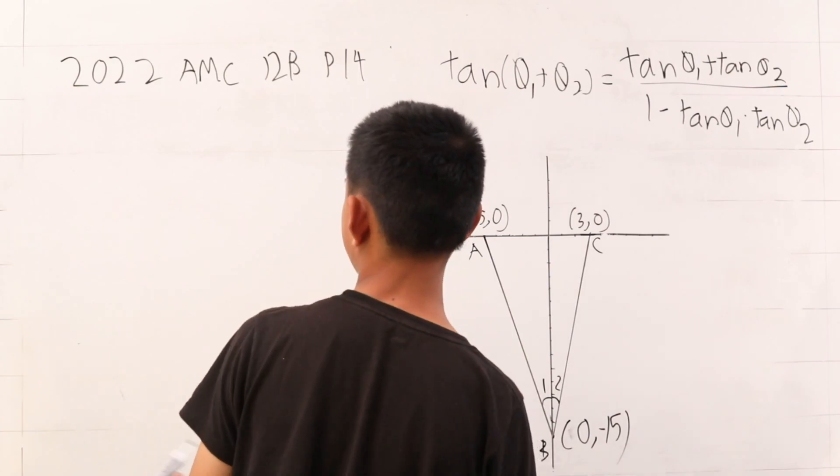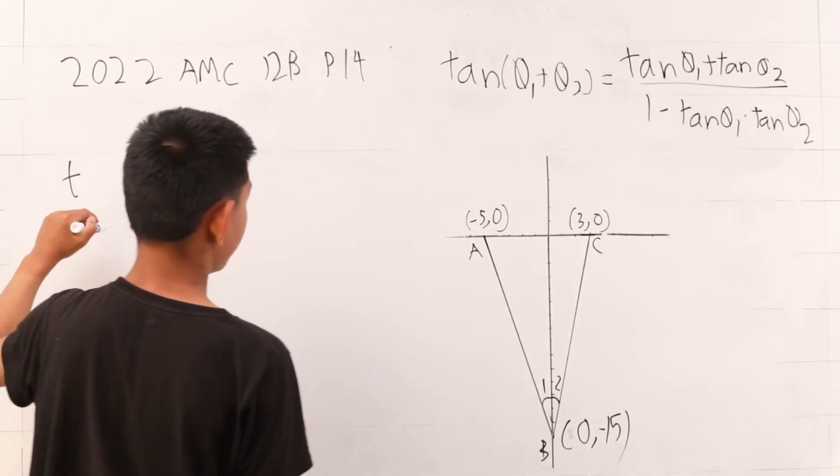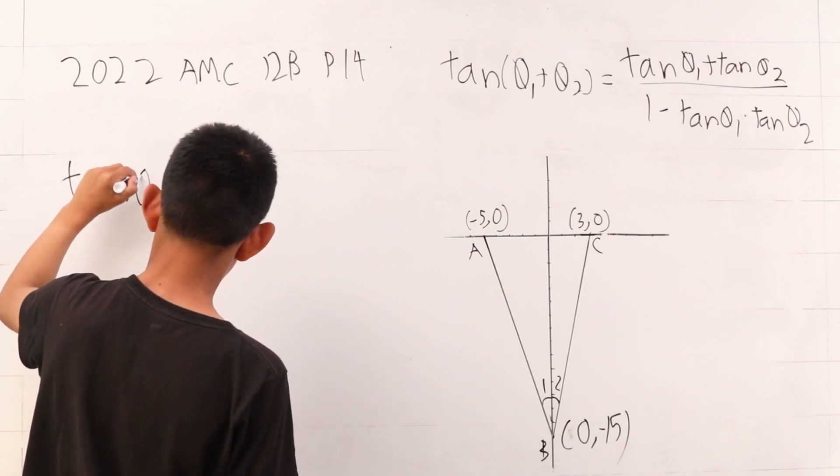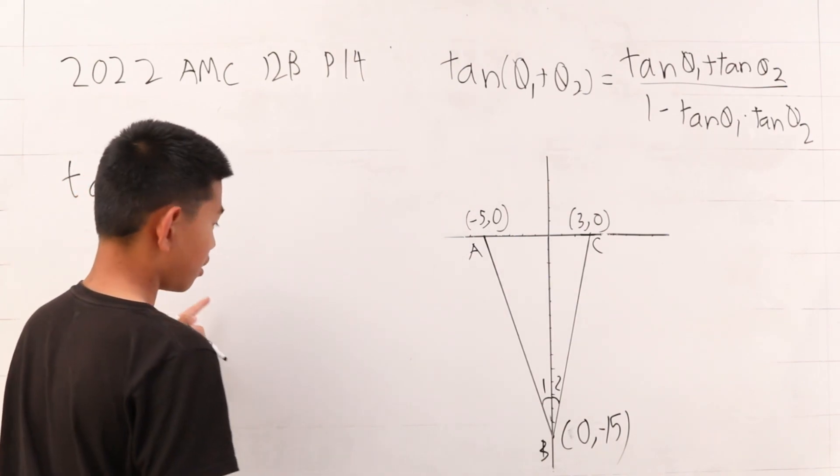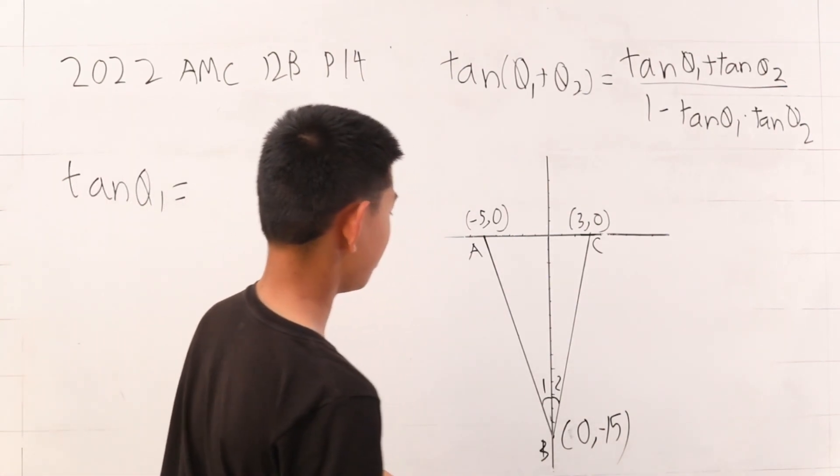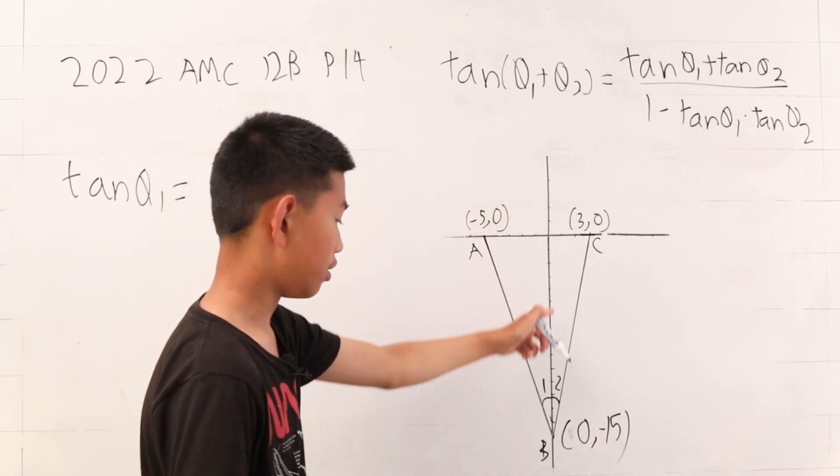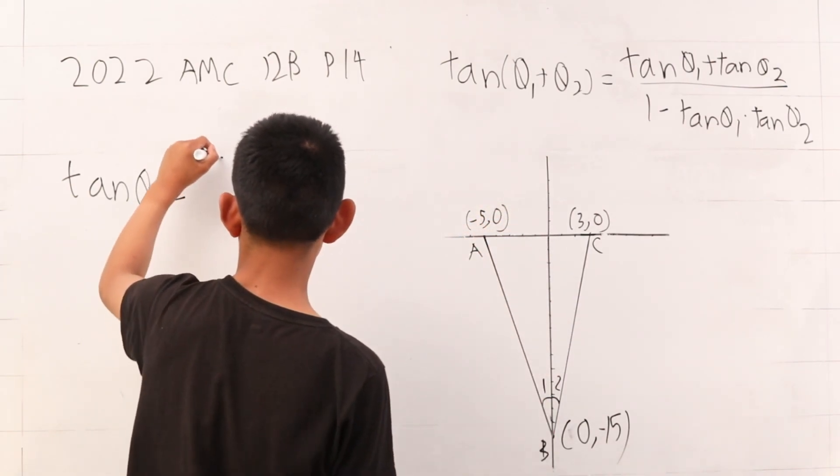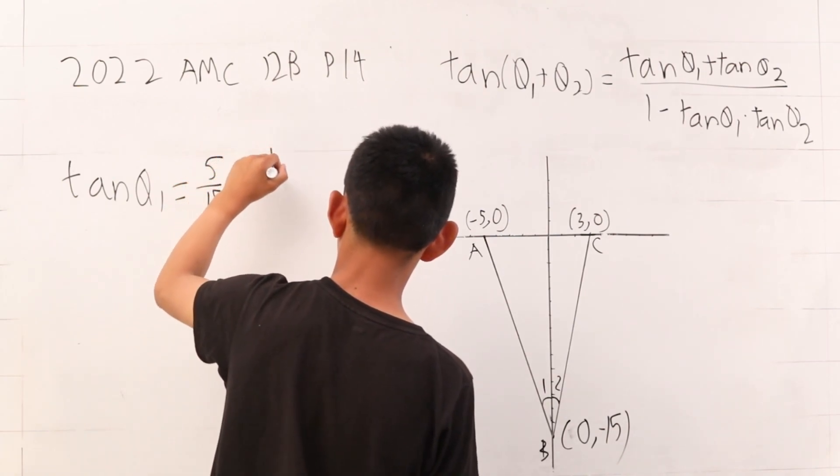So, we can just find that out by using formulas. Tangent of angle 1, that is equal to opposite over hypotenuse. This is 5 and this is 15, so 5 over 15, which is 1 third.